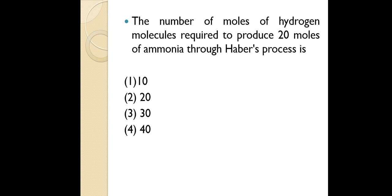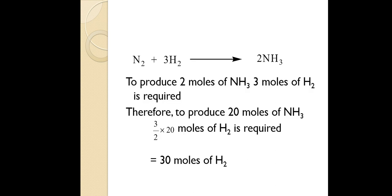The question asks: the number of moles of hydrogen molecules required to produce 20 moles of ammonia through the Haber process. For those not clear on mole concept, please watch the dedicated video I've uploaded. The Haber process reaction is: N₂ + 3H₂ → 2NH₃. We can clearly see that 3 moles of hydrogen are required to produce 2 moles of ammonia.